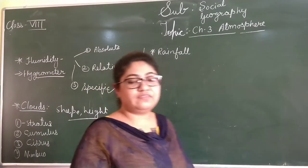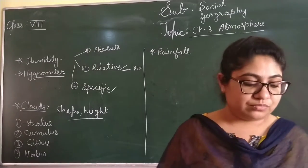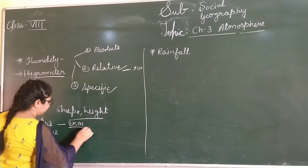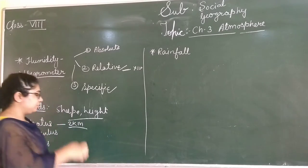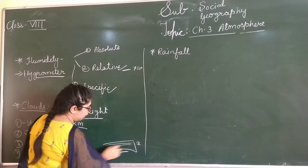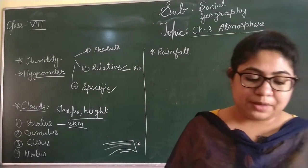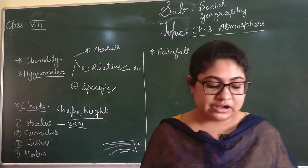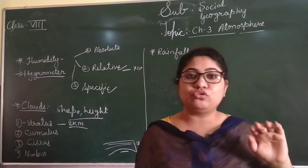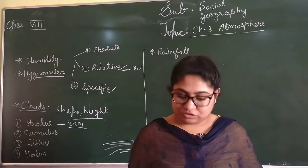First, we talk about Stratus. Stratus type of clouds are found especially from the earth's surface up to two kilometres high. In this type, they appear as thin-shaped layers of large extent. Stratus clouds are associated with fair weather — when the weather is neither very good nor very bad, those type of clouds are seen.